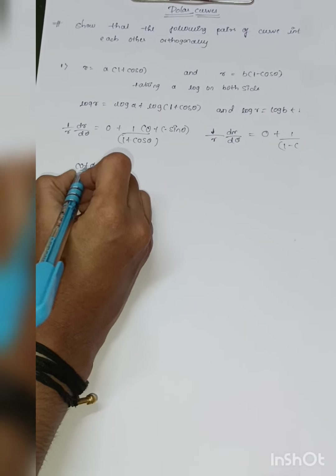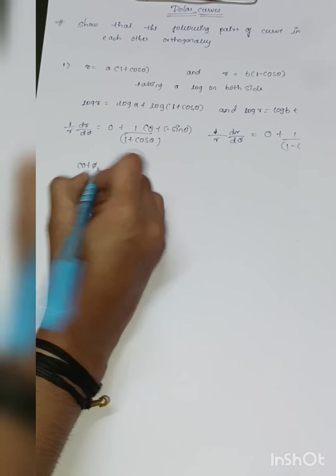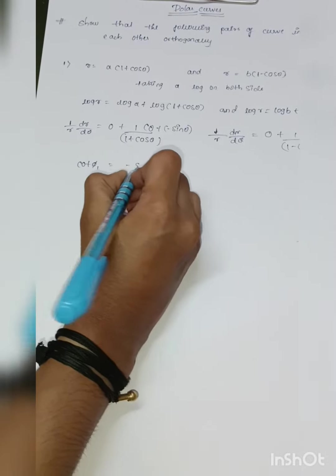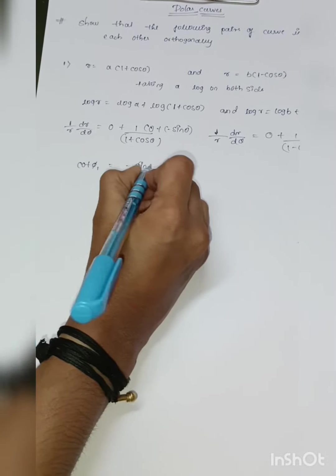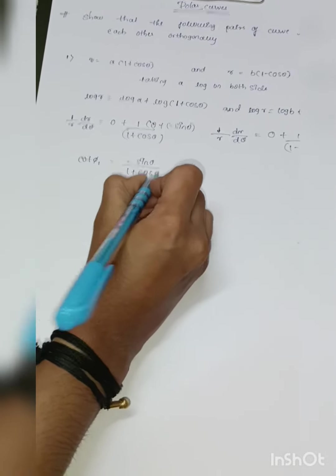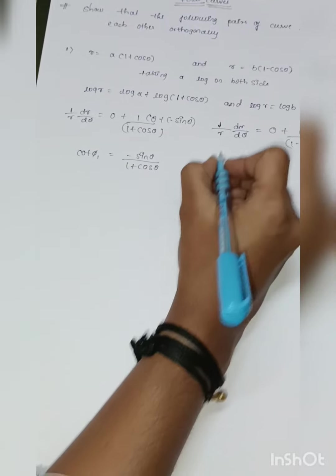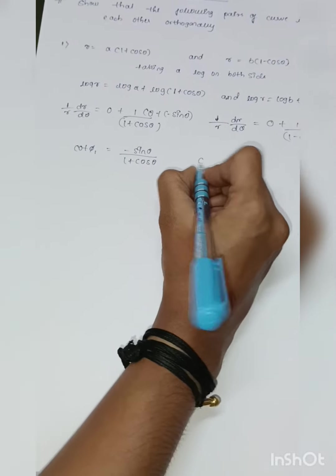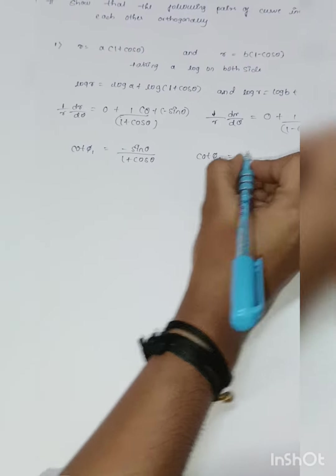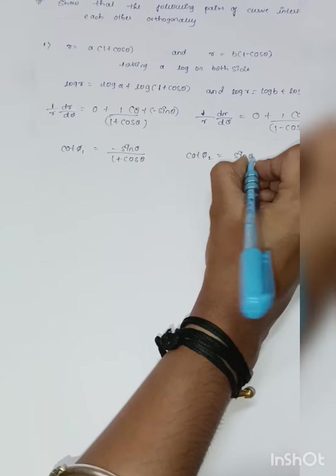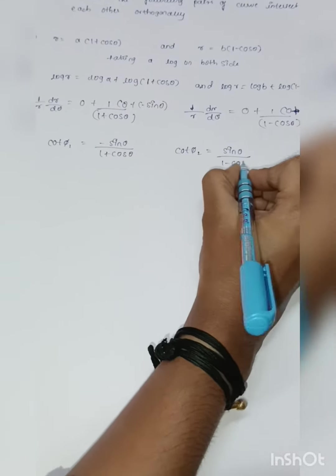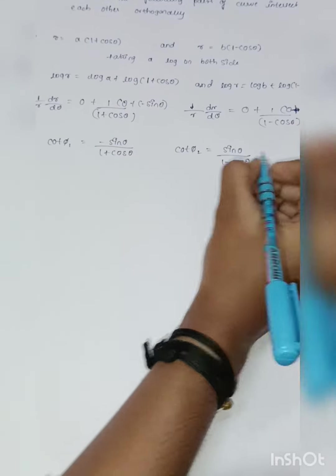So 1/r times dr/d theta gives: cot phi₁ is equal to minus sin theta divided by (1 plus cos theta), and cot phi₂ is equal to sin theta divided by (1 minus cos theta).